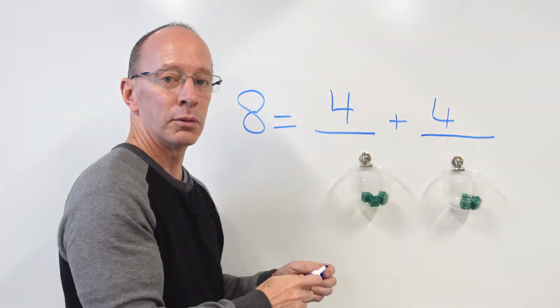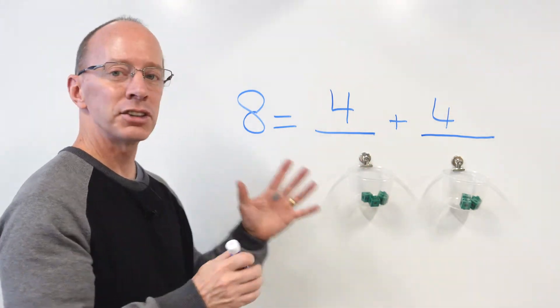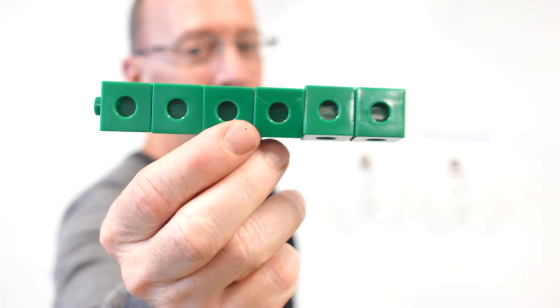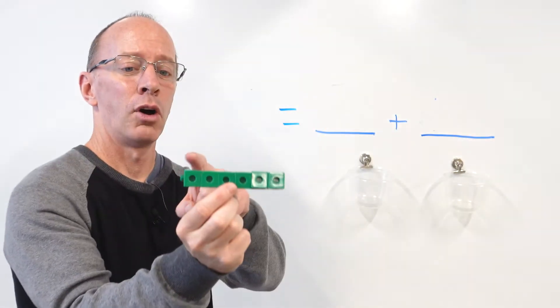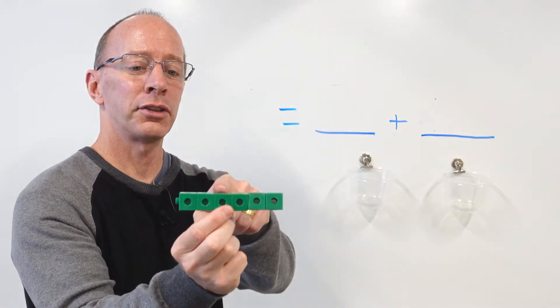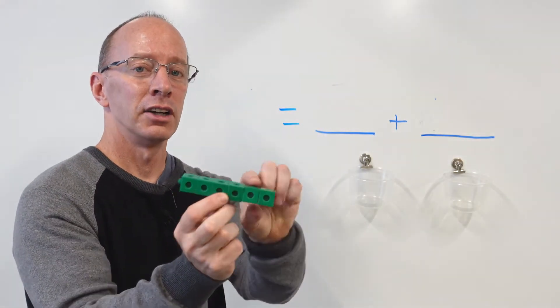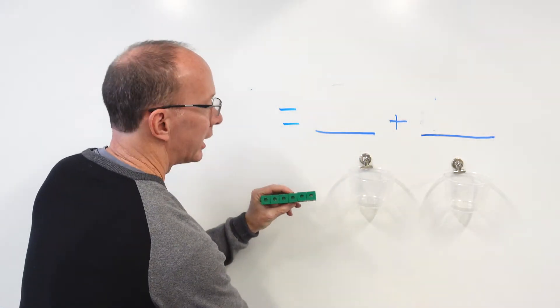All right, let's try another one. Okay, I have six cubes. I have one, two, three, four, five, six. So I'm going to go ahead and write that into the equation.